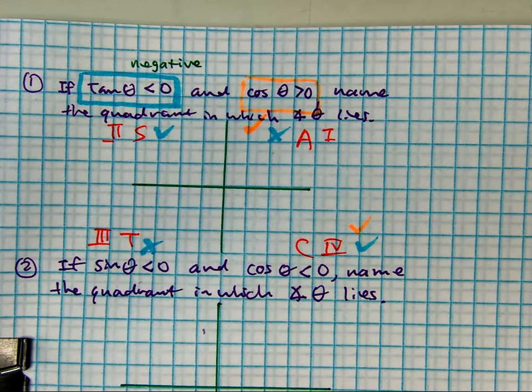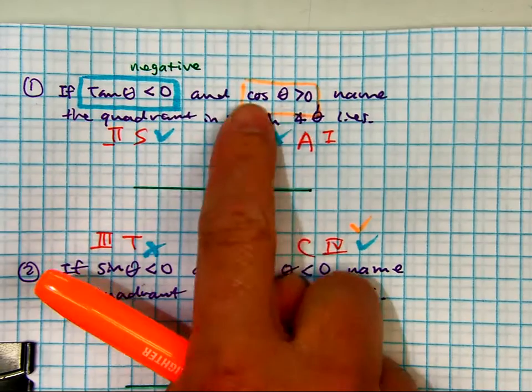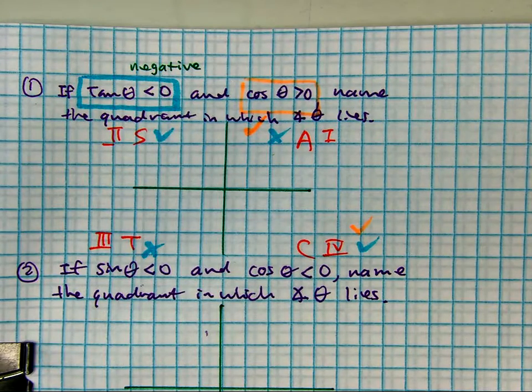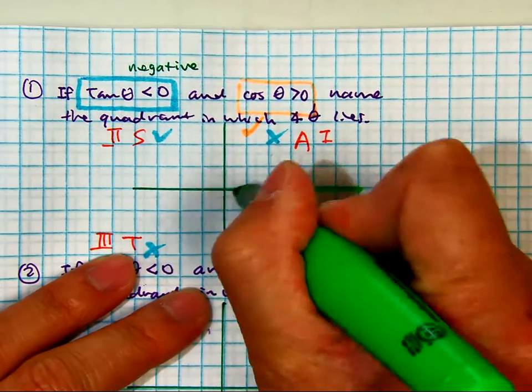And class, where are they both? Where is cosine both positive and tangent negative? The answer is? Quadrant four. Raise your hand if you got that.